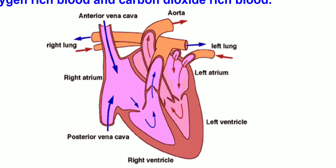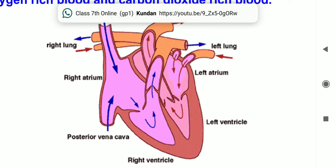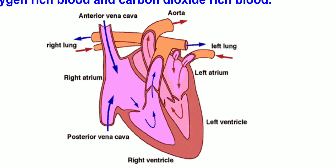When the heart relaxes, the deoxygenated blood is collected from different parts of the body through veins and reaches the right atrium. At the same time, oxygenated blood is received from the lungs in the left atrium, and this process continues during relaxation. During contraction, the deoxygenated blood is sent to the lungs for purification, and oxygenated blood from the lungs is sent to different parts of the body. In this way, the circulation of blood — the cycle of blood — goes on.